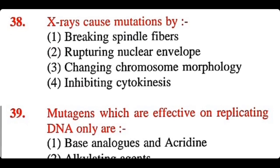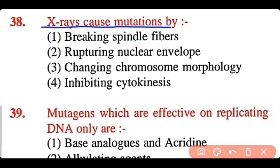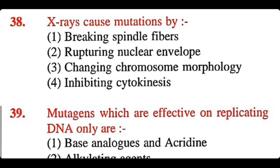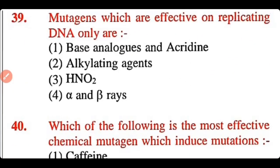Question 38: X-rays cause mutation by: breaking spindle fiber, rupturing nuclear envelope, changing chromosome morphology, or inhibiting cytokinesis. The correct answer is option 3. X-rays cause mutation by changing the chromosome morphology.